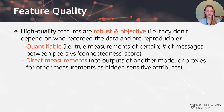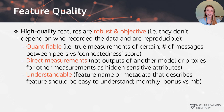On the point of direct measurements: avoid using outputs that come from another model or an unknown source, because this might hide bias or proxy variables. Thirdly, features should also be understandable — the feature name or metadata provided should describe what the feature is all about. For example, 'monthly_bonus' is much easier to understand than using 'MB'.